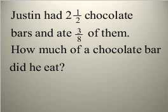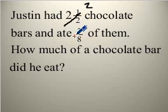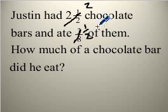Justin had two and a half chocolate bars and he ate three eighths of them. How much of a chocolate bar did he eat? Again, let's change these into simpler numbers. Let's change two and a half to just two, and instead of three eighths, let's use a half.